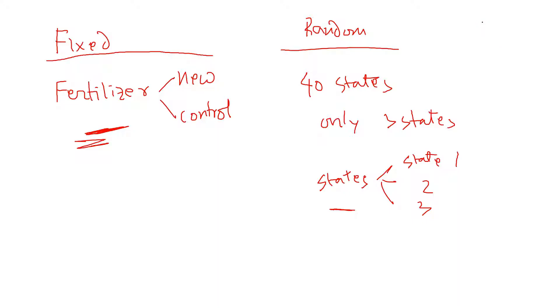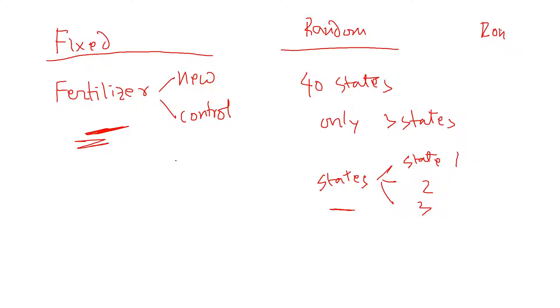For example, the response variable Y may be the yield, the amount of crops that we grow here. So then this random variable is also sometimes called block. This term also came from the agriculture field.